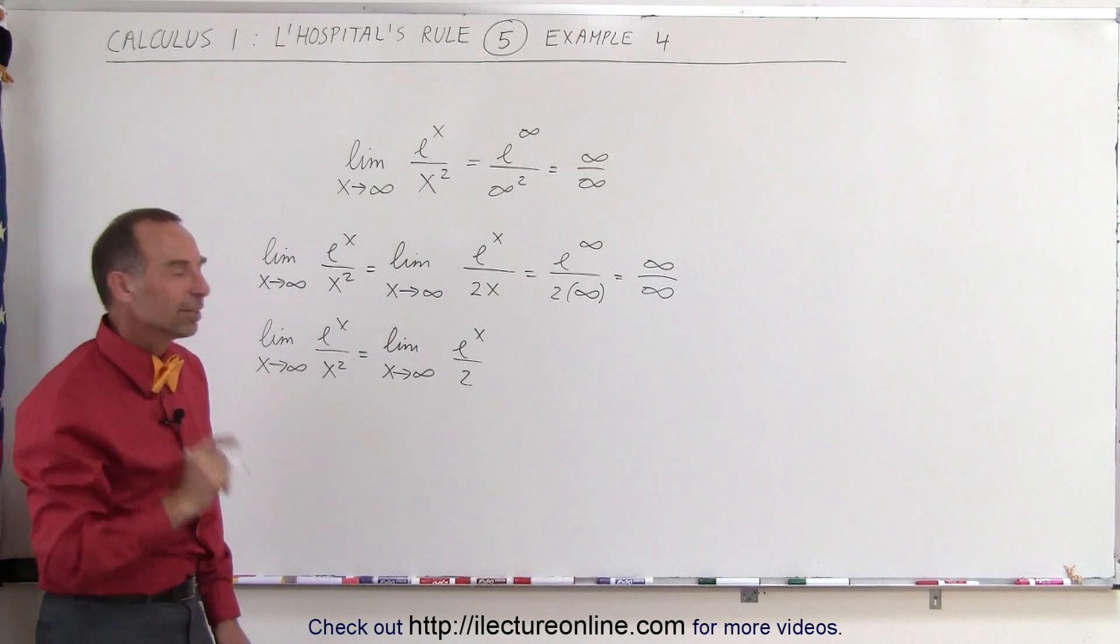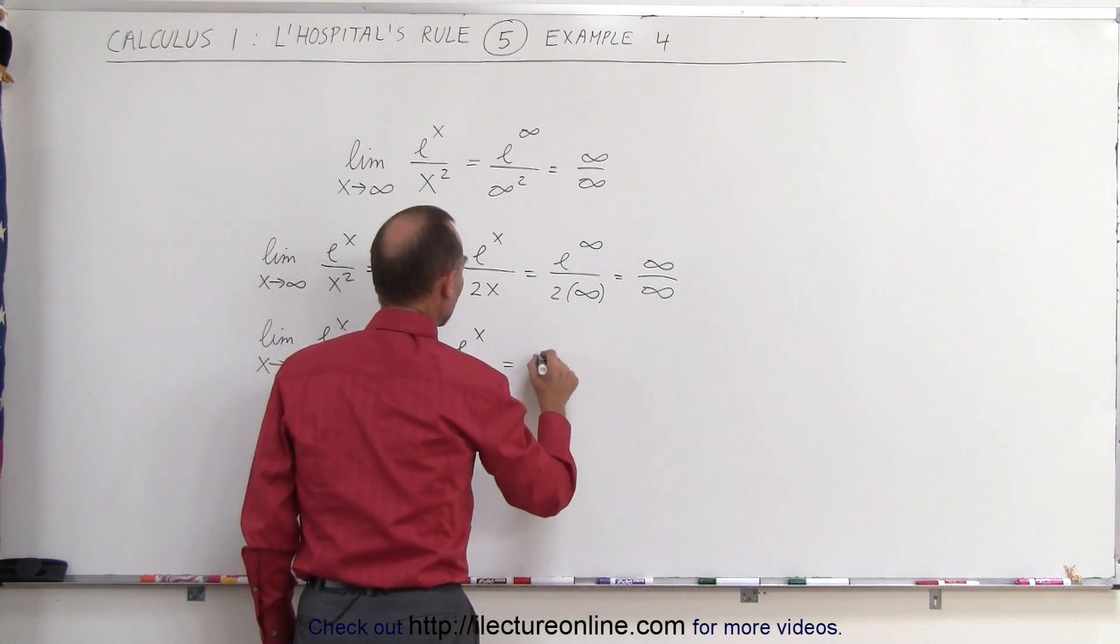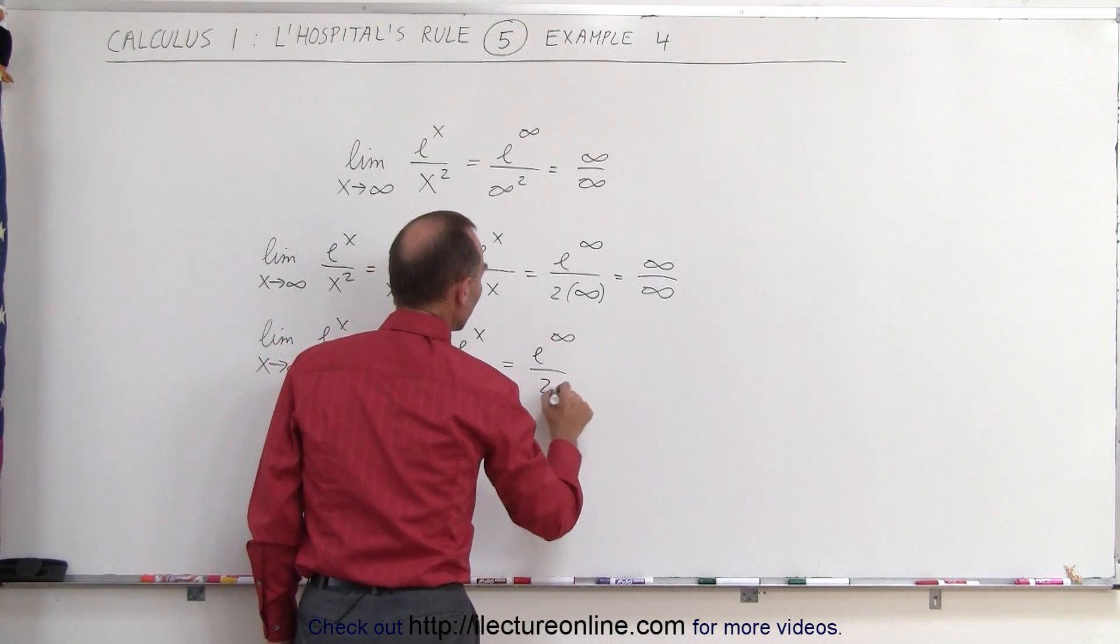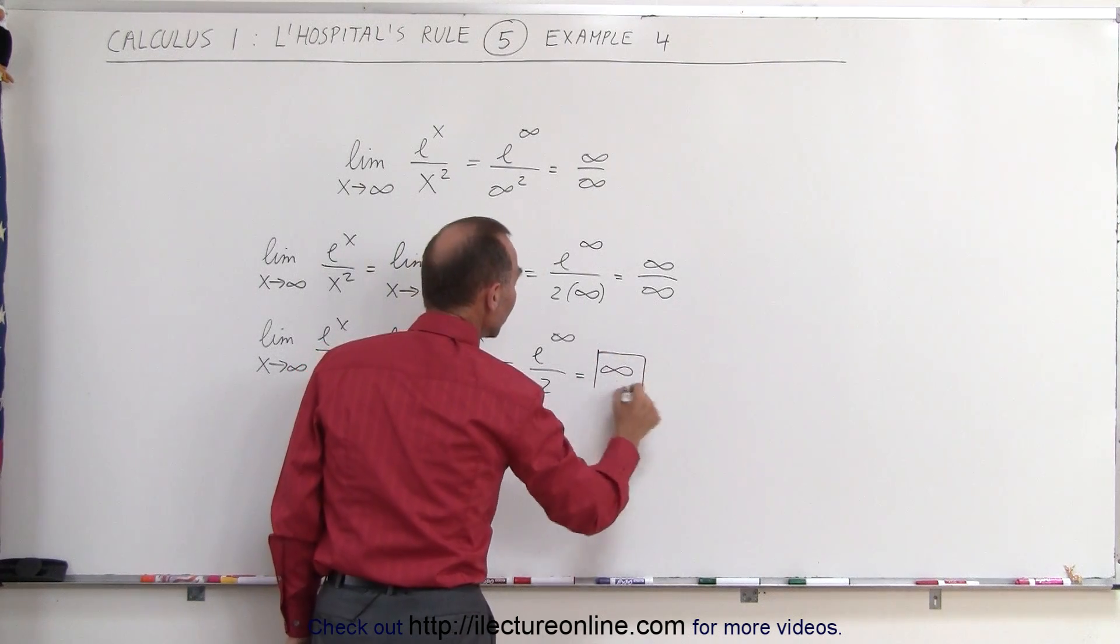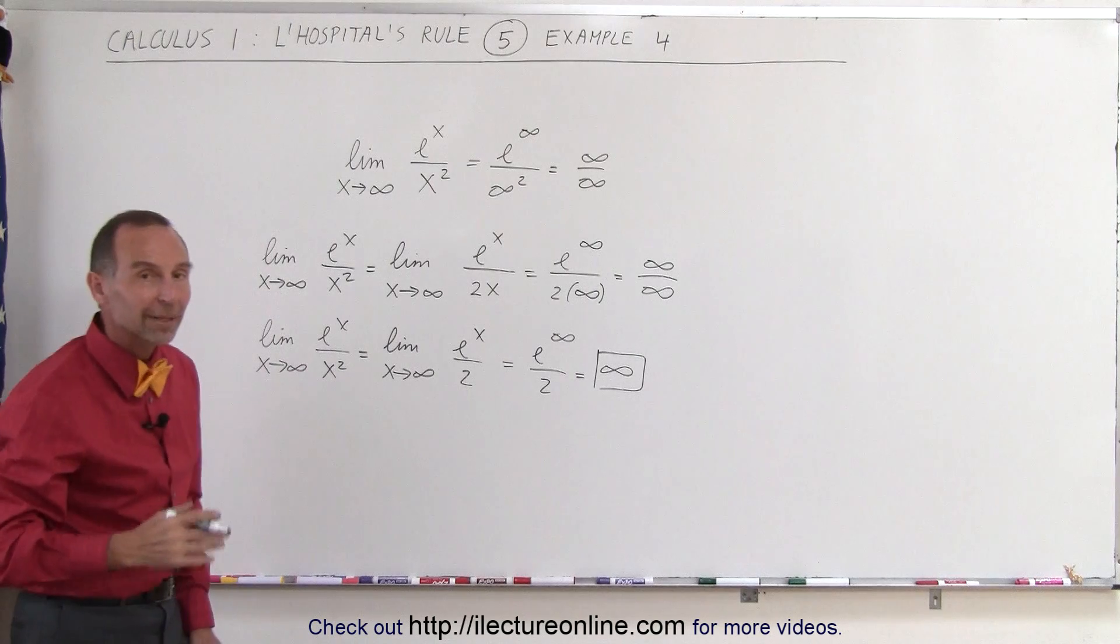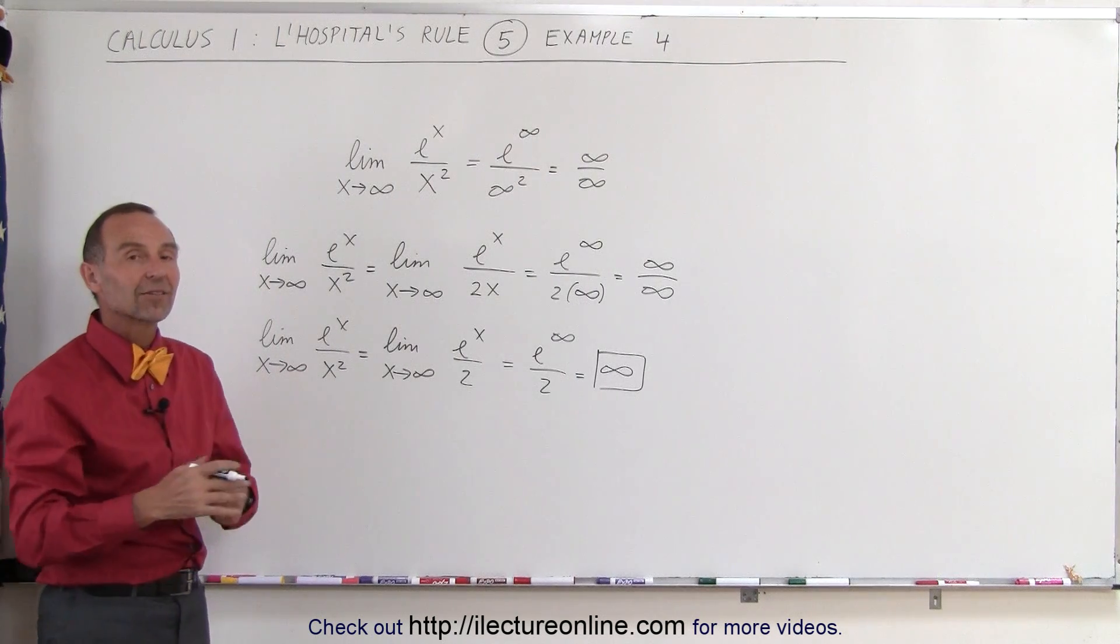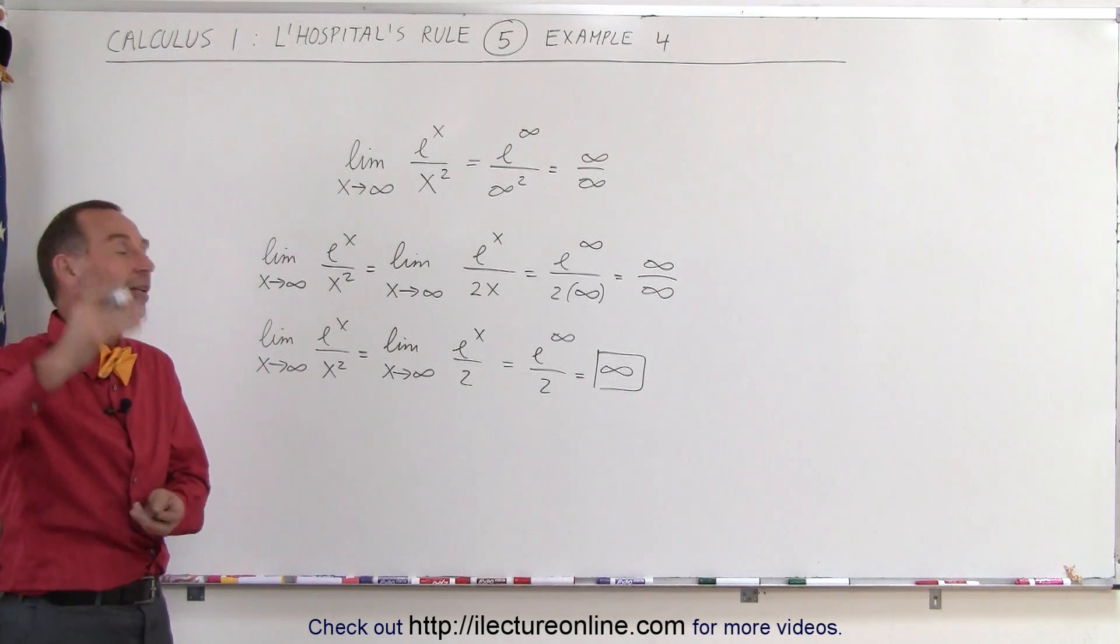Now when we plug in the limit, something different happens. This is now equal to e to the infinity divided by 2, which simply equals infinity. But now this is a legitimate limit. The limit is infinity - that is not an undefined limit, that is a defined limit. It goes to infinity as x goes to infinity.